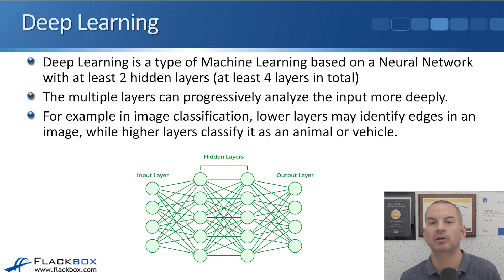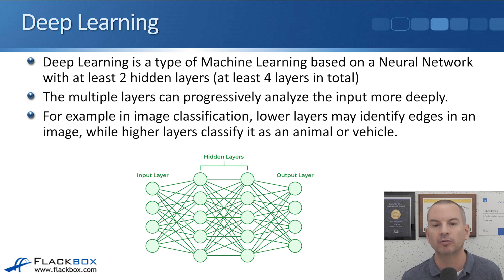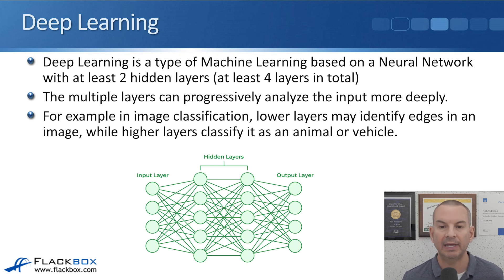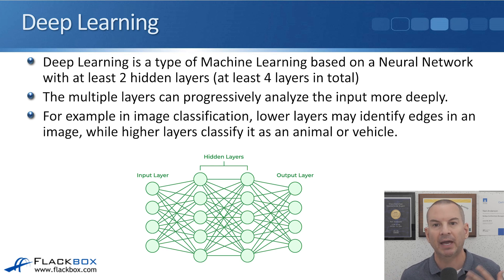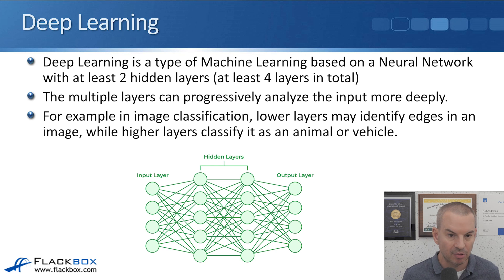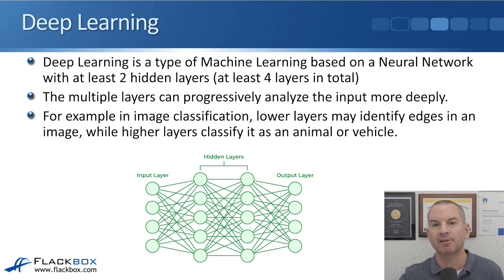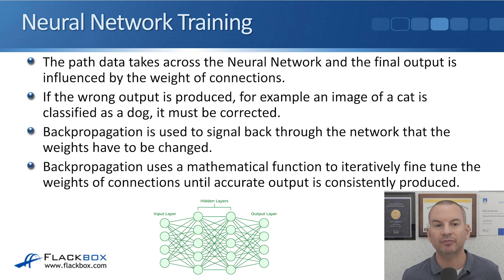Deep learning is a type of machine learning based on a neural network with at least 2 hidden layers — that's at least 4 layers in total when including the input and output layers. The multiple layers can progressively analyze the input more deeply. For example, in image classification, lower layers may identify edges in an image while higher layers classify it as an animal or vehicle, getting progressively more advanced as it goes through the different layers. The path data takes across the neural network is influenced by the weights on the connections between nodes.